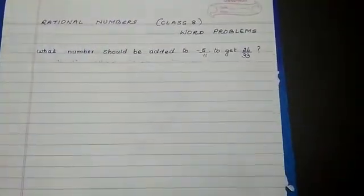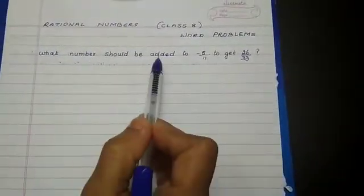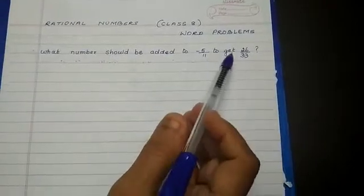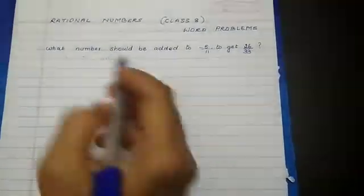The next word problem on rational numbers. What number should be added to minus 5 by 11 to get 26 by 33?